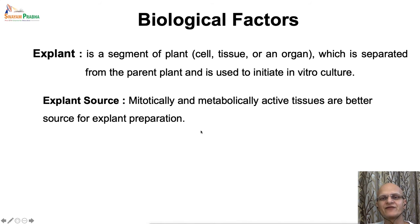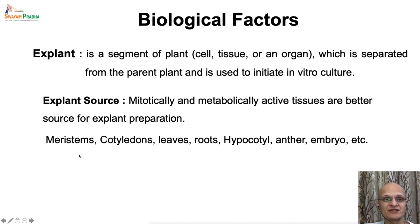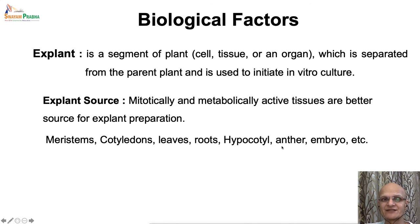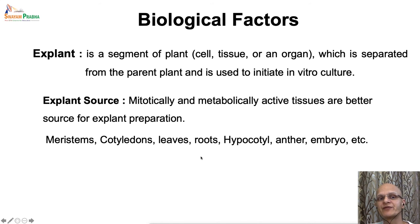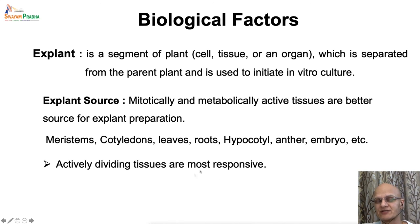Mitotically or metabolically active tissues are the best source for explant preparation. The in vitro culture responses from metabolically or mitotically active tissues would be the best among all explants. There are several different types of vegetative tissues at different stages of metabolic activity that can be used to initiate in vitro cultures, such as meristems, apical meristems — root or shoot apical meristems — axillary buds, cotyledons, actual leaves, roots or root apical meristems, hypocotyls, inflorescence parts, anthers, and immature embryos. All these tissues can be used as they are actively growing. However, their potentiality depends upon the particular species.